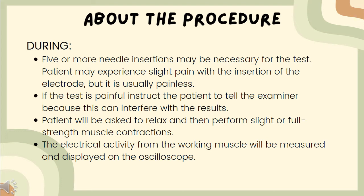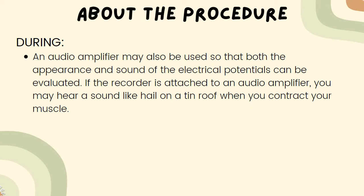The patient will be asked to relax and then perform slight or full extent muscle contractions. The electrical activity from the working muscle will be measured and displayed on the oscilloscope, a laboratory instrument commonly used to display and analyze the waveform of electronic signals — in effect, it draws a graph of the instantaneous signal voltage as a function of time. An audio amplifier may also be used so that both the appearance and sound of the electrical potentials can be evaluated. If the recorder is attached to an audio amplifier, you may hear a sound like hail on a thin roof when you contract your muscle.